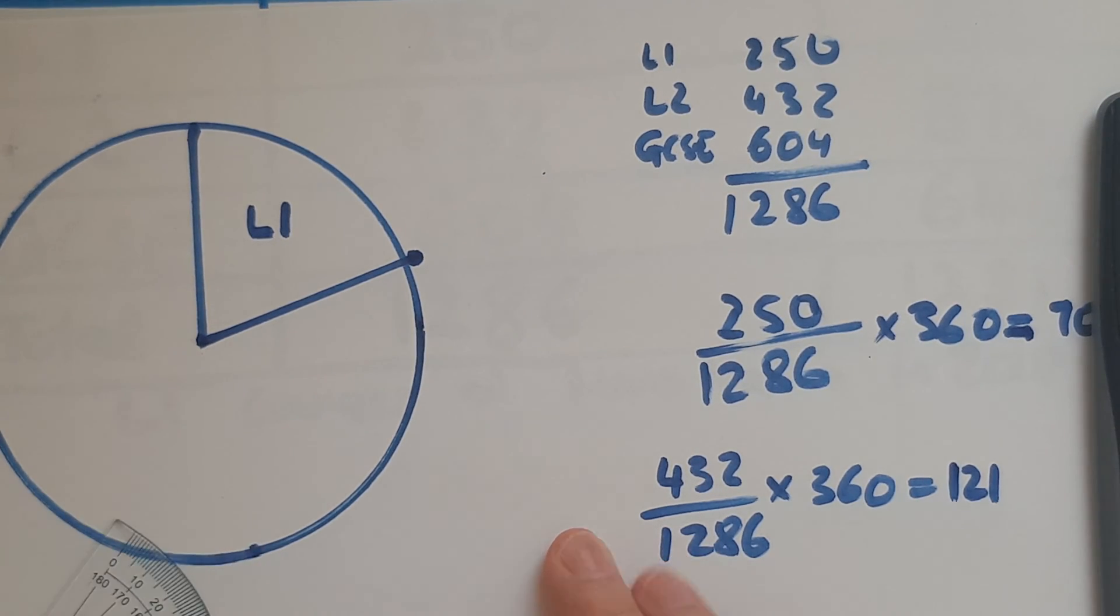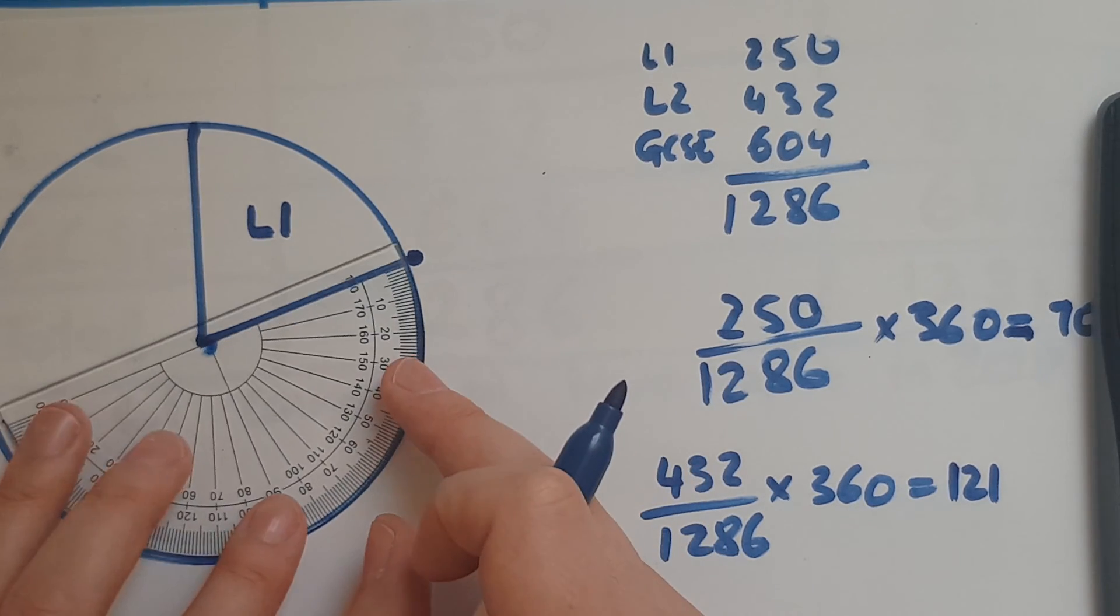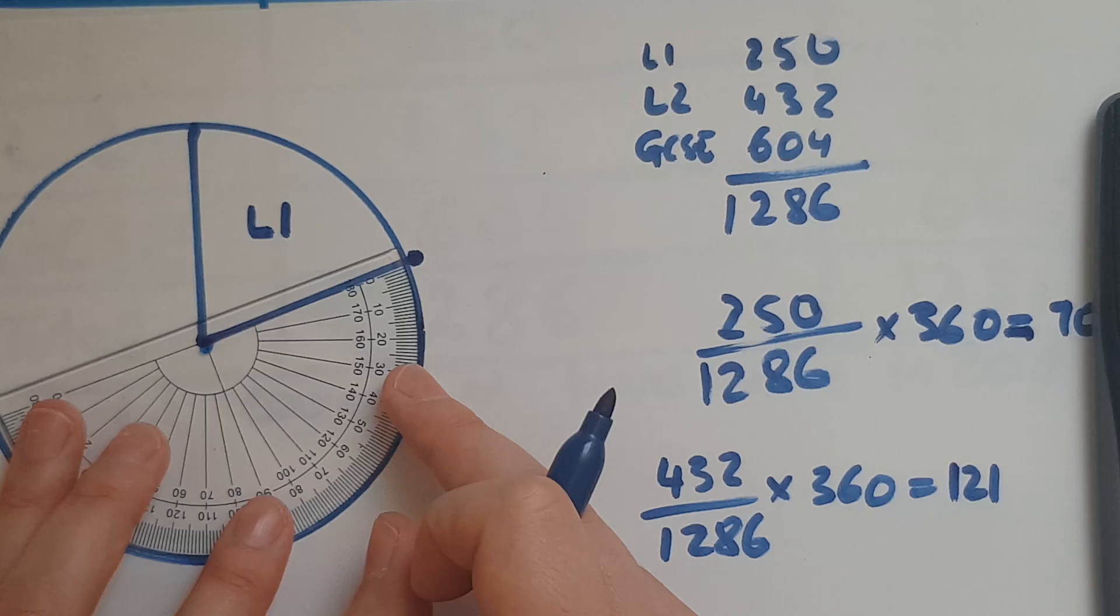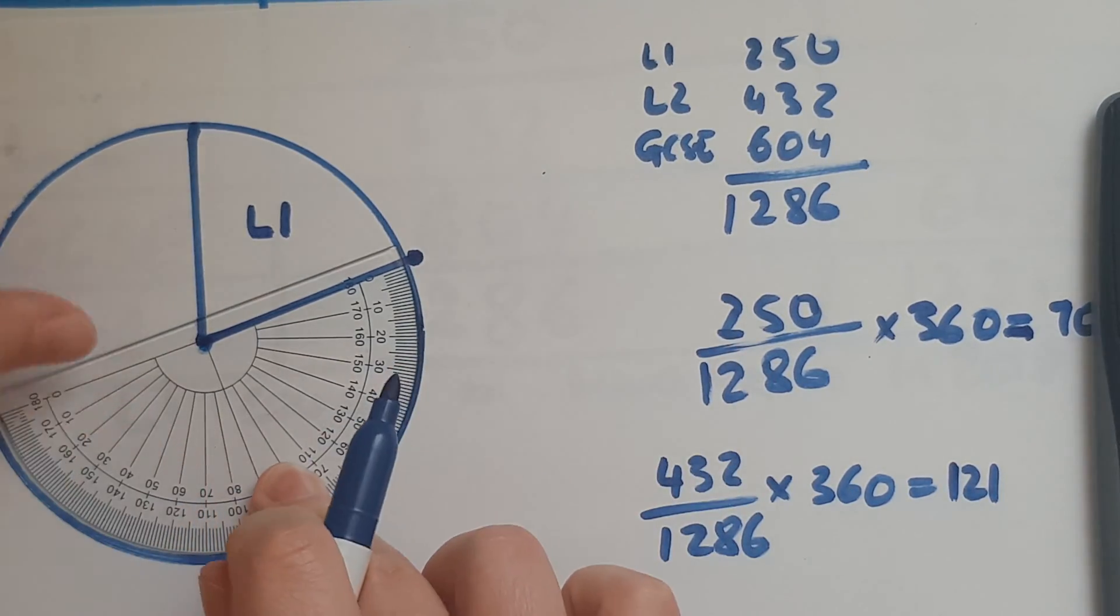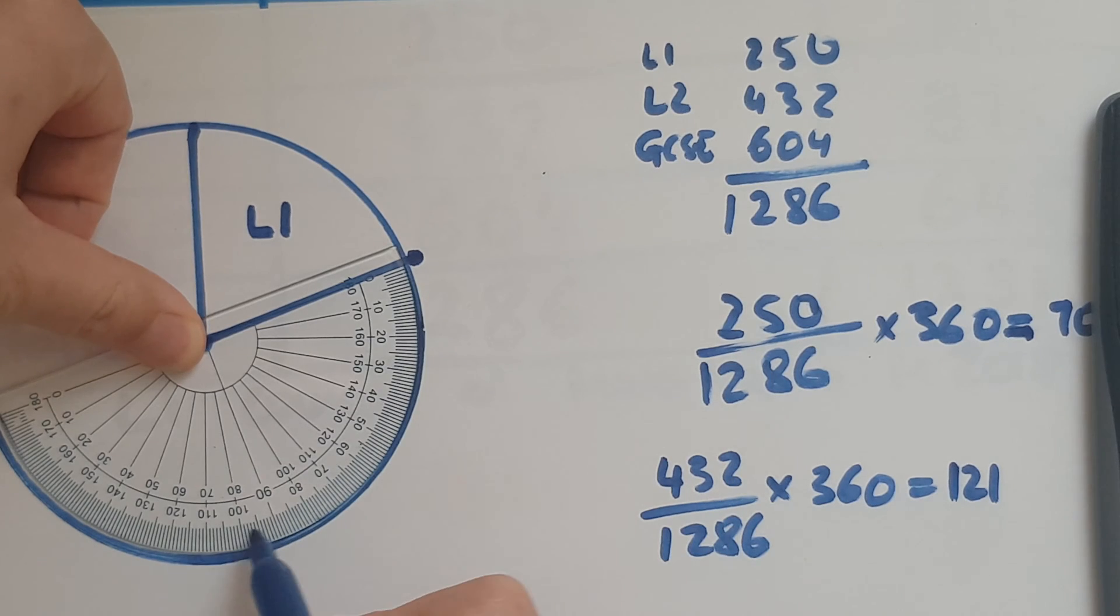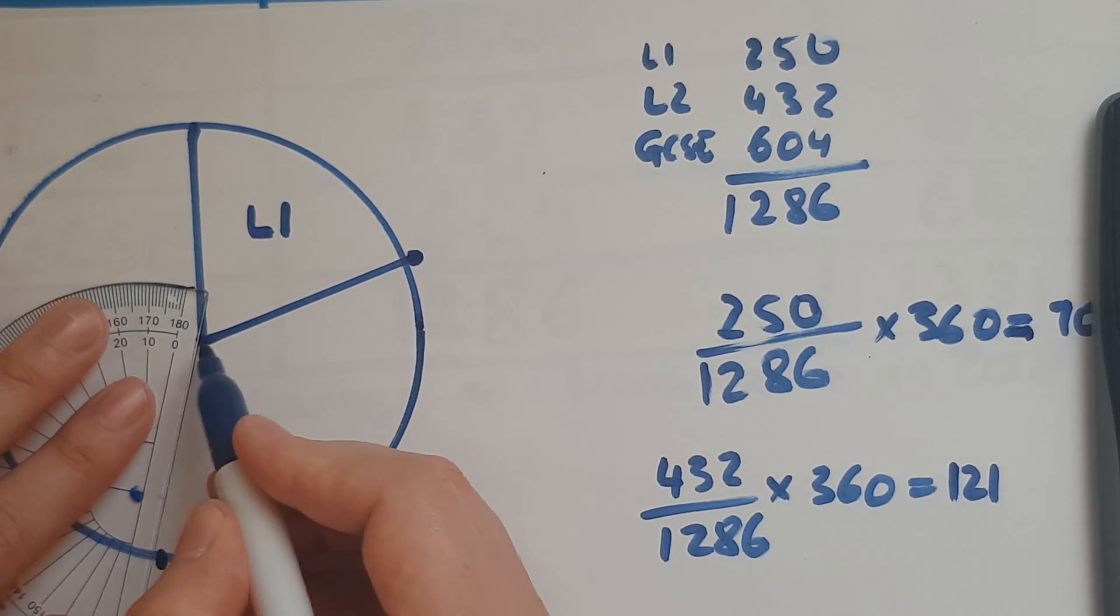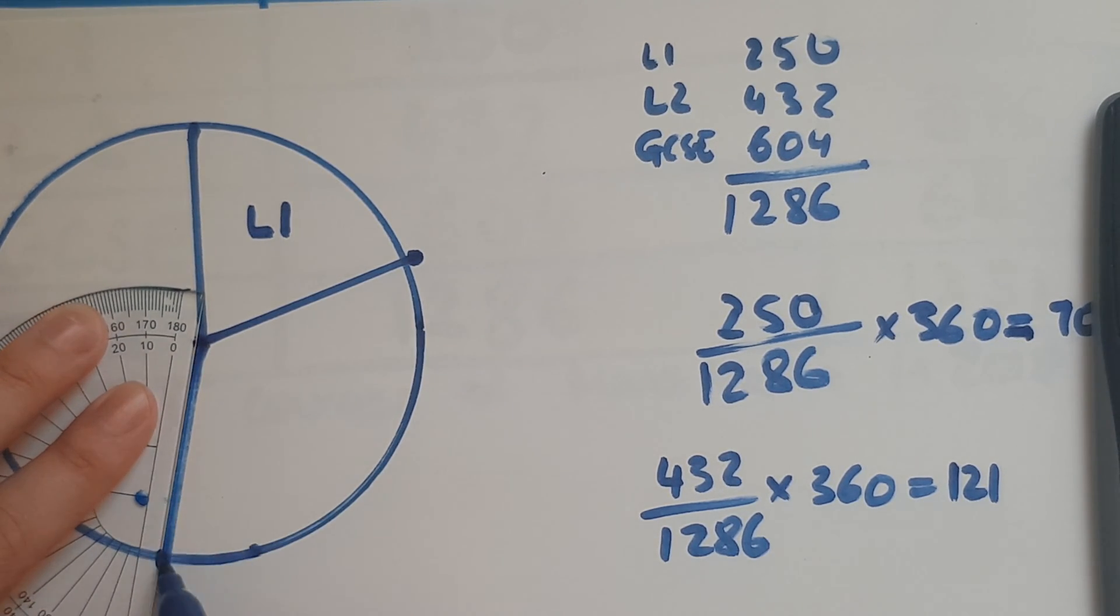So now we'll start from where I finished with level one. So again, lining it up, center matching the center of the circle, and we go from 0, we need to go to 121. So 121 is just here. Again, connecting this with the center.